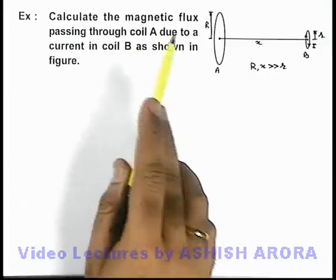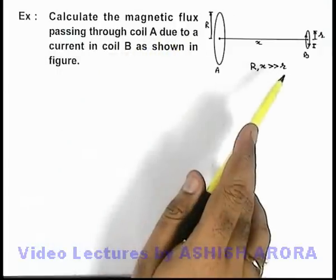In this example we are required to calculate the magnetic flux passing through coil A due to current in coil B as shown in figure.